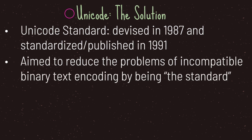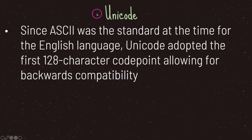Unicode is a standard that aimed to reduce the problems of incompatible binary text encoding by being the standard. Since ASCII was the standard at the time for the English language, Unicode adopted the first 128 character code points, which allowed Unicode to be backwards compatible. That means if other schemes were to implement Unicode there would be no issues in terms of binary text compatibility.